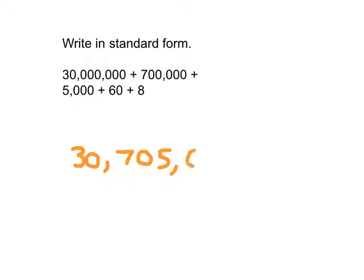And remember, we write 68 as 0, 6, 8. Look over the number first, read it over, 30,705,068, and then double-check again to make sure that each of those is the appropriate value.